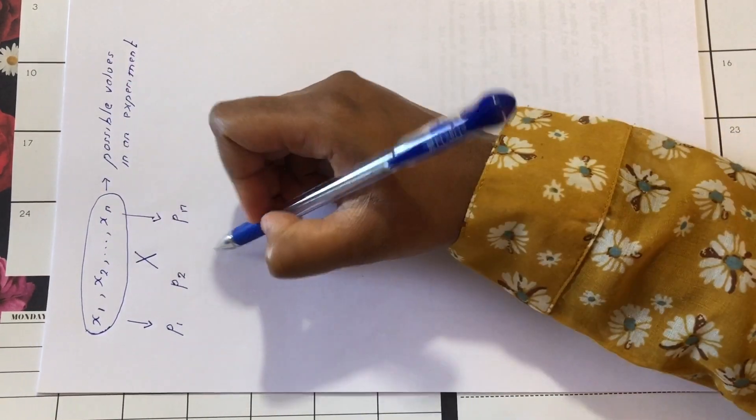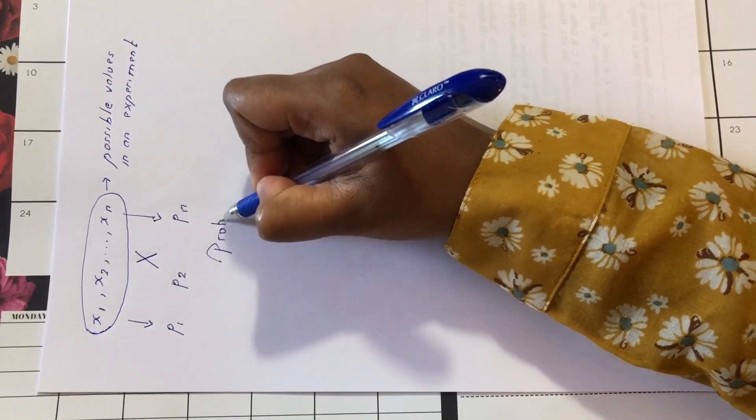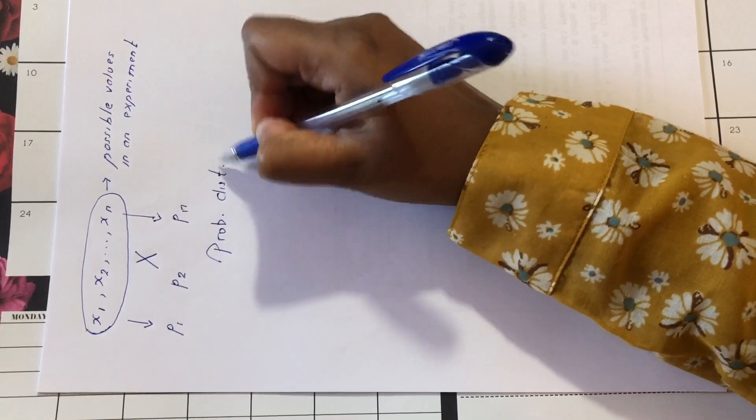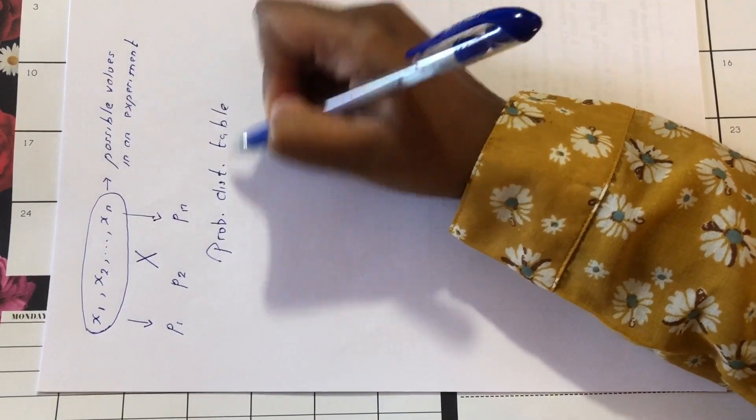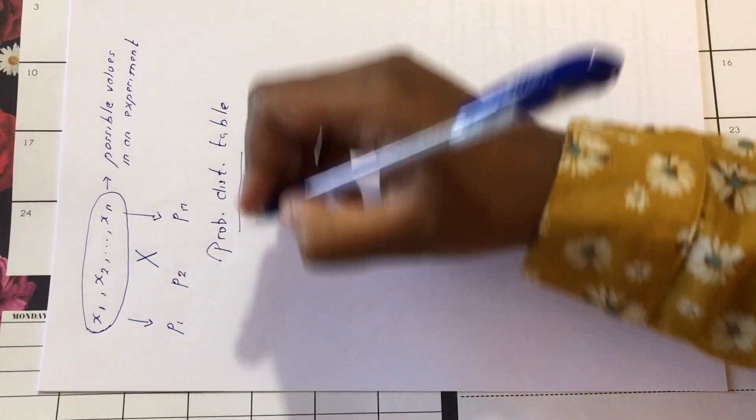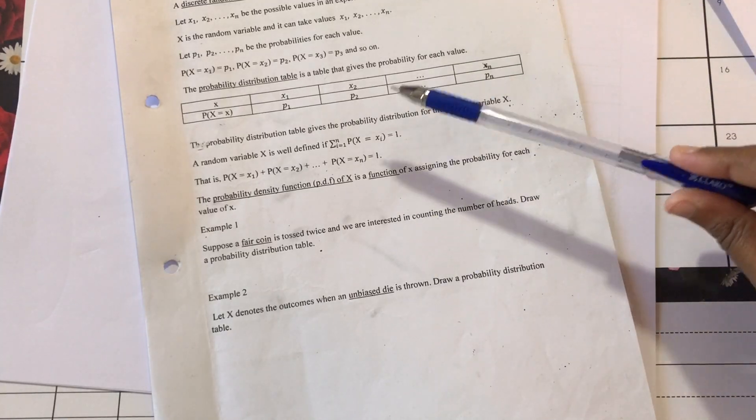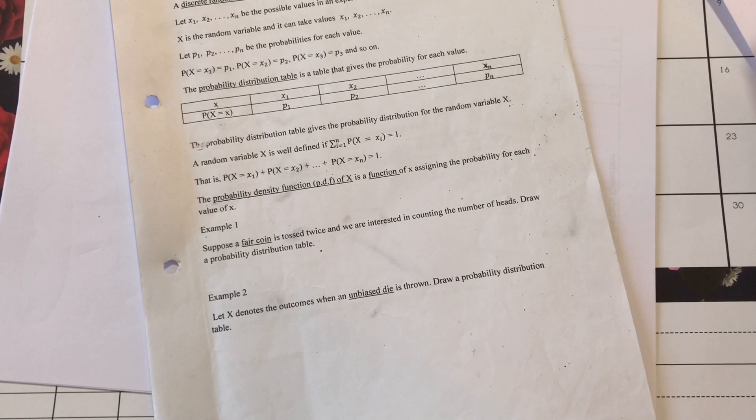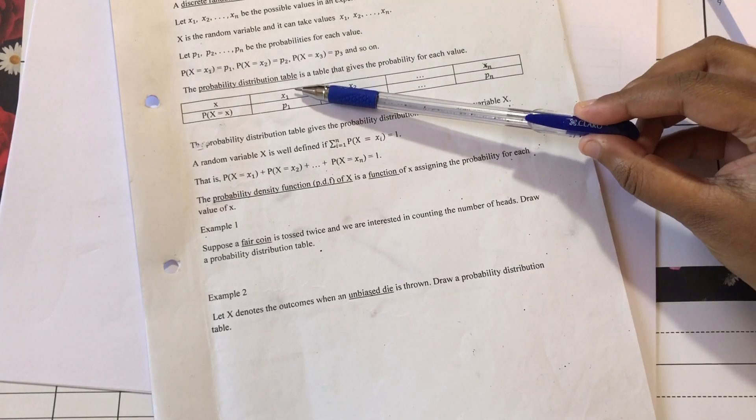We have seen that we can draw a probability distribution table that gives the probability for each value. The probability distribution table is a table that gives the probability for each value.